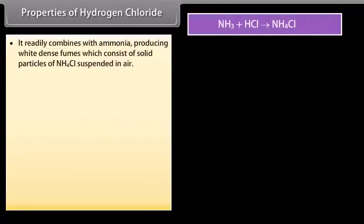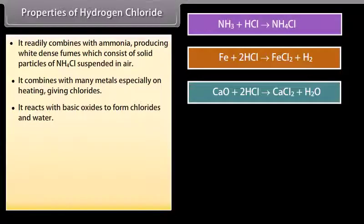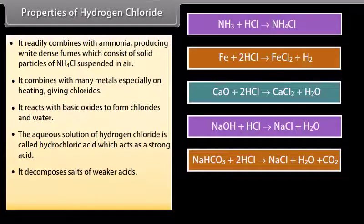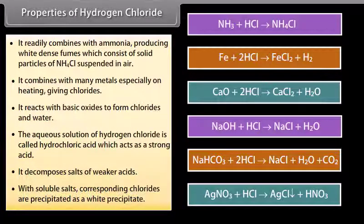Properties of hydrogen chloride: It readily combines with ammonia producing white dense fumes of solid NH₄Cl suspended in air. It combines with many metals, especially on heating, giving chlorides. It reacts with basic oxides to form chlorides and water. The aqueous solution, called hydrochloric acid, acts as a strong acid. It decomposes salts of weaker acids; with soluble salts, corresponding chlorides are precipitated as a white precipitate.